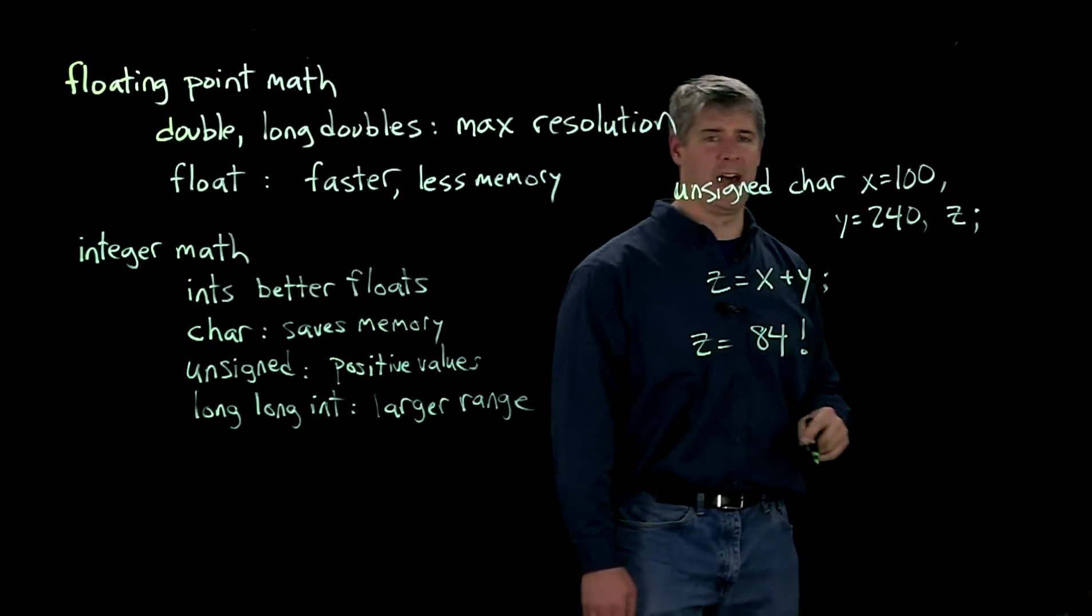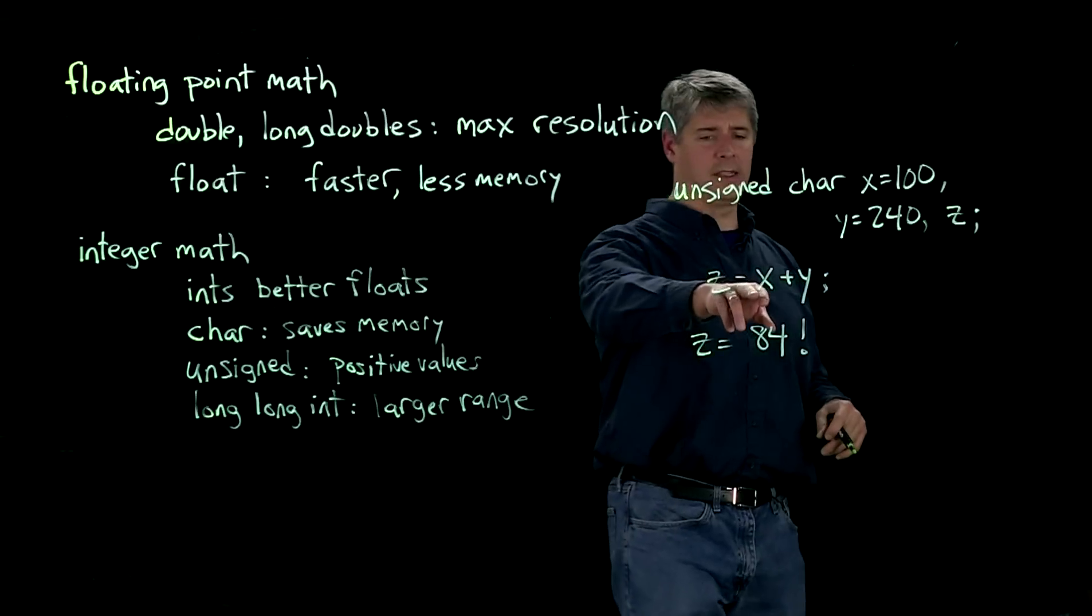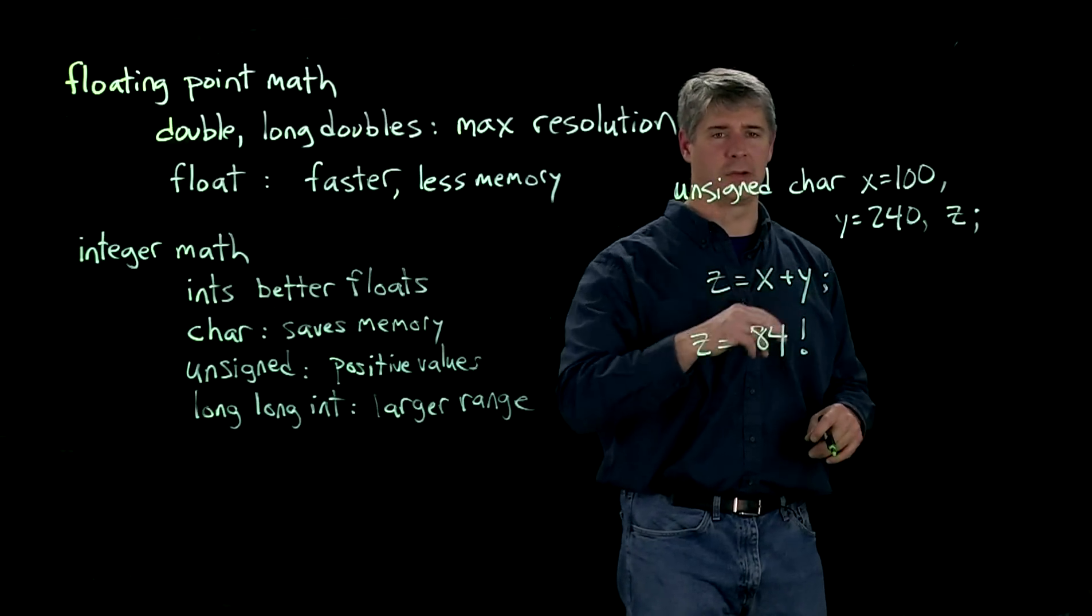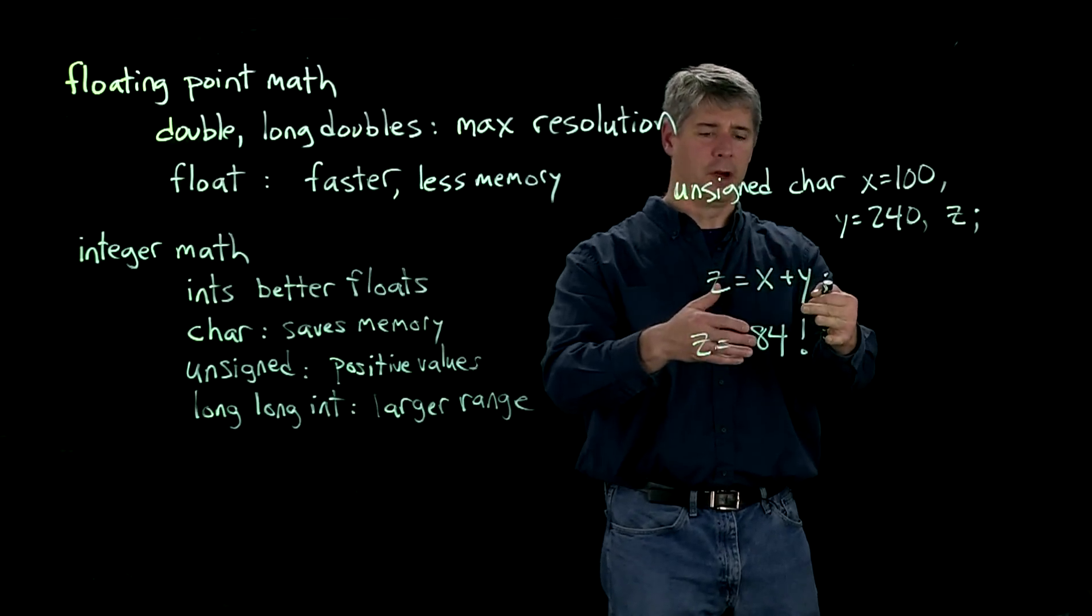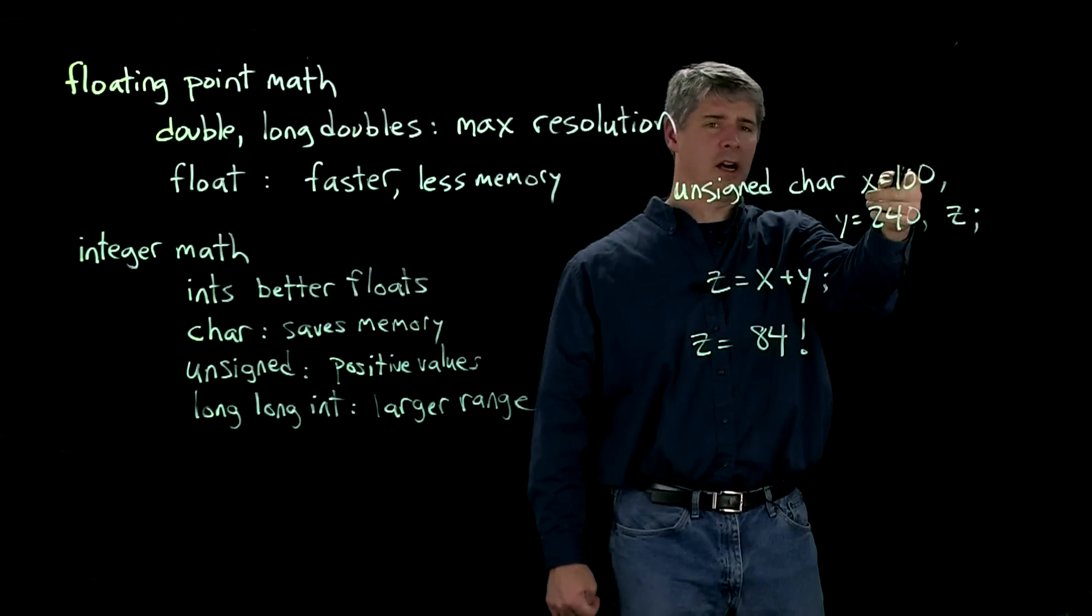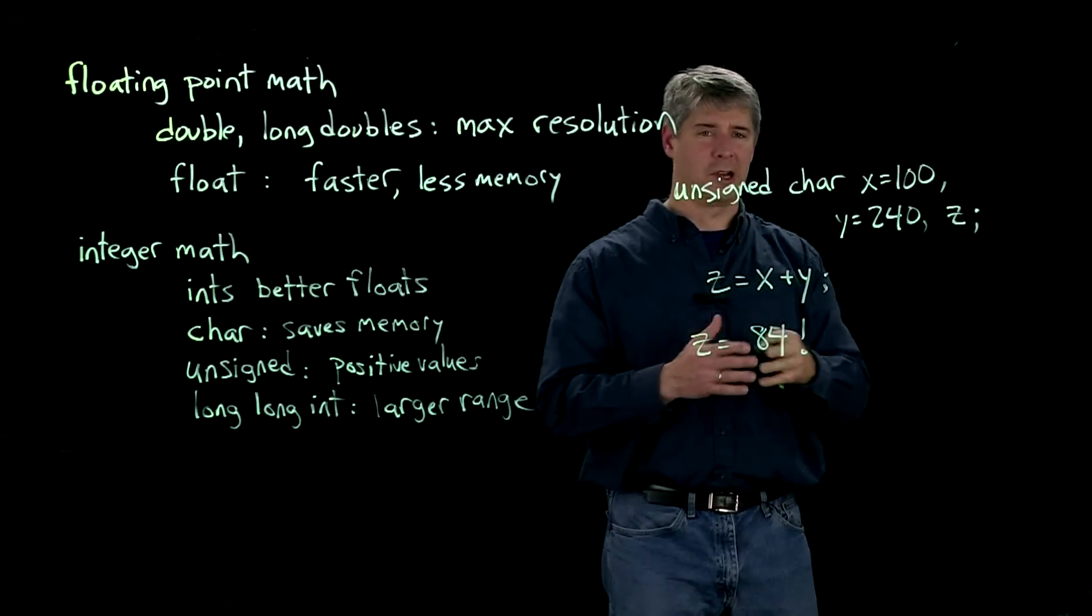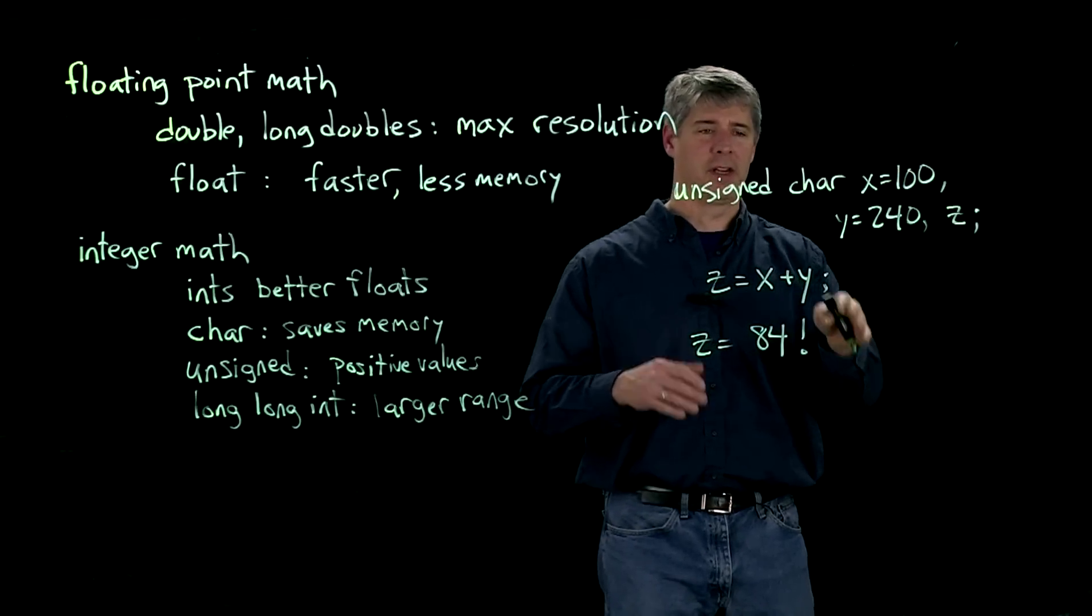So why is that? Well, when you added the two chars and assigned it to another char, there was an overflow. The 240 plus 100 made 340, which is larger than the 0 to 255 range that can be represented by the unsigned char.